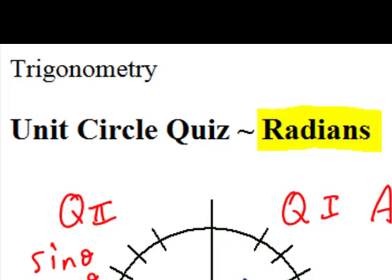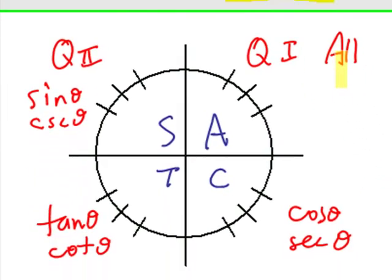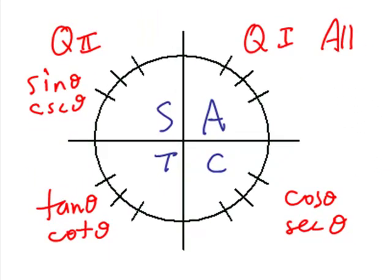I hope that you've seen my degree measure one first, because it goes over the quadrants and talks briefly about how all six trig functions are positive in quadrant one, sine and cosecant are positive in quadrant two, tangent cotangent in quadrant three, and cosine and secant are positive in quadrant four.